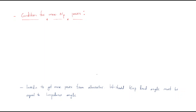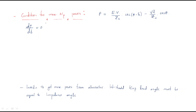Next we will discuss the condition for maximum output power — how we get the maximum output power. The active power P equals EV/Zs·cos(θ-δ) - V²/Zs·cosθ. To get the condition for maximum power, we differentiate with respect to the variable and set it equal to zero. The variable here is the load angle δ.